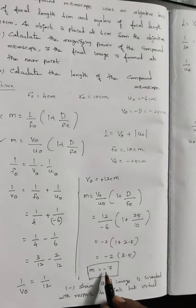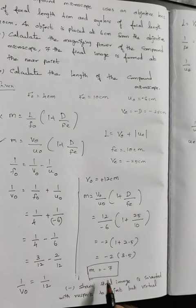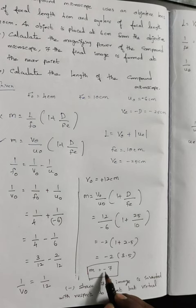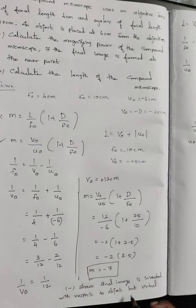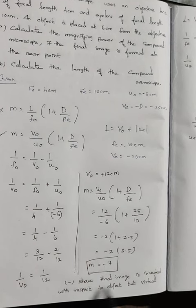The minus doesn't indicate that the image is real; actually the image is virtual. The minus is there to show that with respect to the object, the final image is inverted.